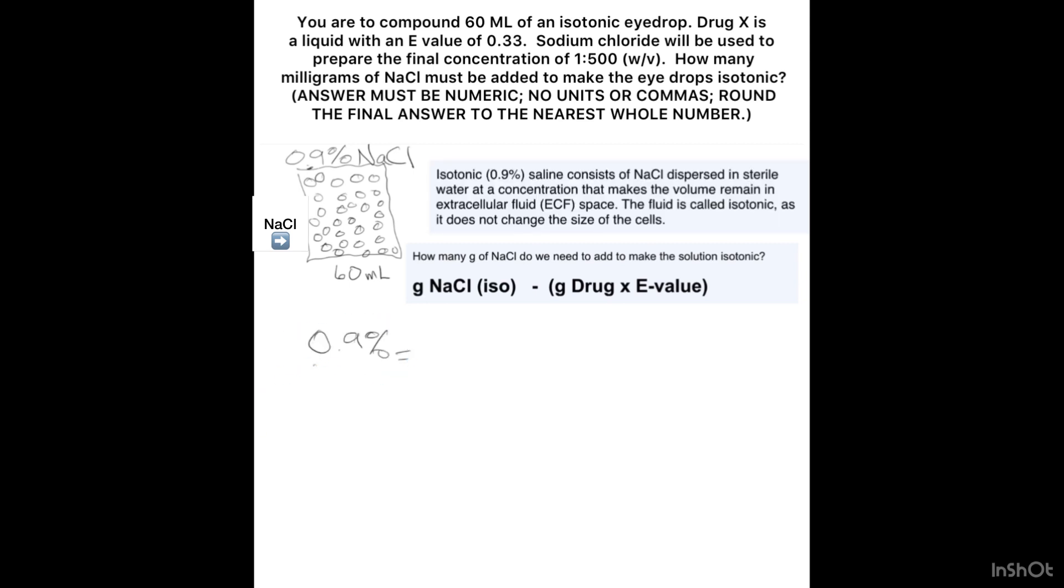0.9% is isotonic so I can rewrite it as 0.9 grams NaCl over 100 milliliters. That is going to tell us that we have a concentration that is isotonic.